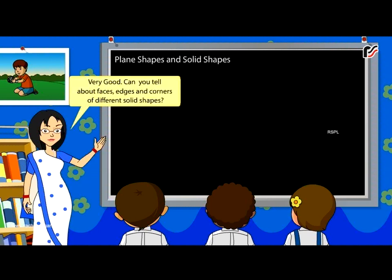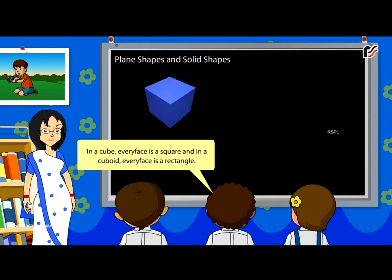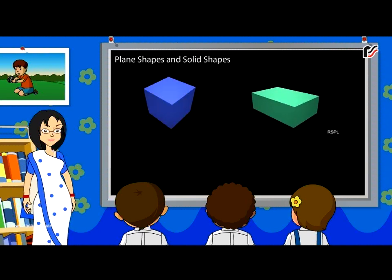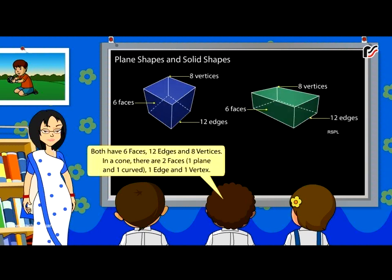Very good! Can you tell about faces, edges and corners of different solid shapes? In a cube, every face is a square. And in a cuboid, every face is a rectangle. Both have six faces, twelve edges and eight vertices.